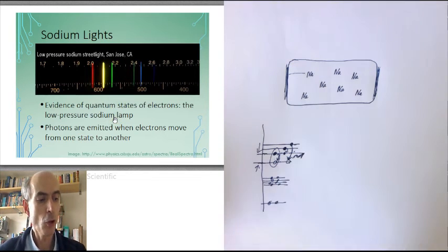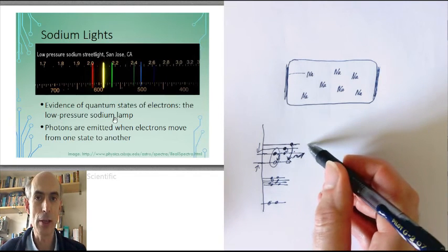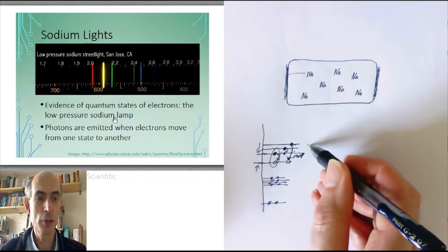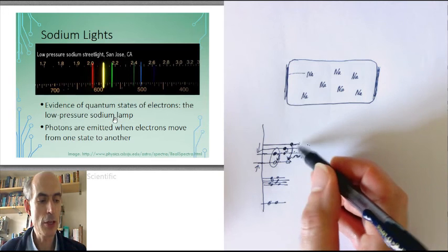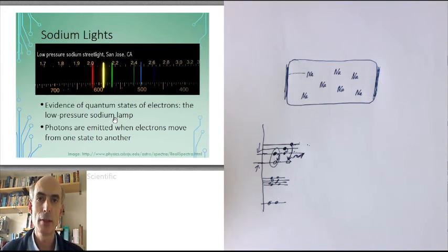But you will always only get photons with the amount of energy corresponding to the difference between these discrete energy levels in the sodium atoms. So there's only a certain small number of different colours of light you can get out of this bulb.